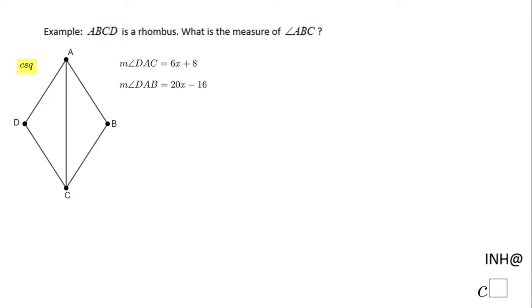Welcome or welcome back to INeedHelpAtCSquared. In this example we have a rhombus ABCD, and we need to find the measure of angle ABC, which is this angle. We know that the measure of angle DAC, which is this angle here, is 6x + 8, and the measure of angle DAB, which is this angle, the big angle, is 20x - 16.